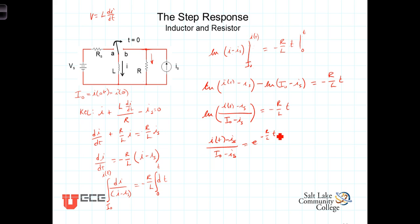Now, multiplying both sides by this denominator, and then adding Is to both sides, allows us to solve for I(t), and we get then, I(t) is equal to Is plus (I naught minus Is) times e to the minus R over L times t.